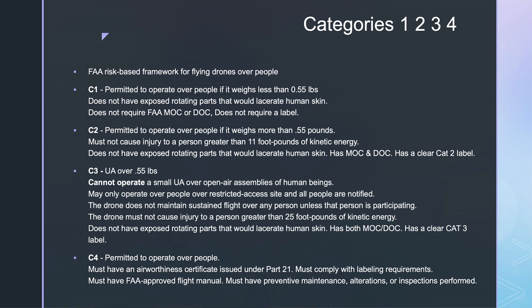Category two, you are permitted to operate over people if your drone weighs more than 0.55 pounds. It must not cause injury to a person greater than 11 foot pounds of kinetic energy. It does not have exposed rotating parts that would lacerate human skin. It has the MOC and DOC. And it has a clear label, category two on the drone.